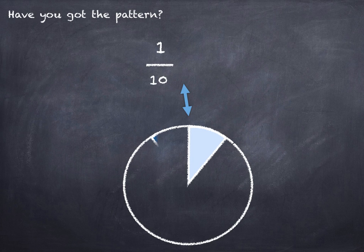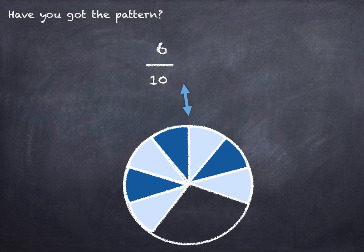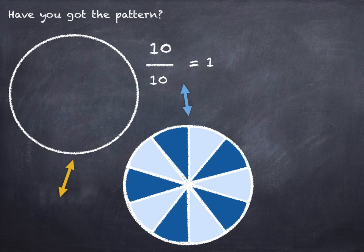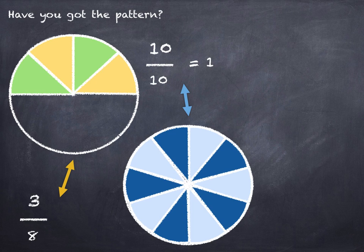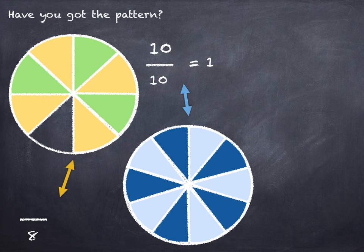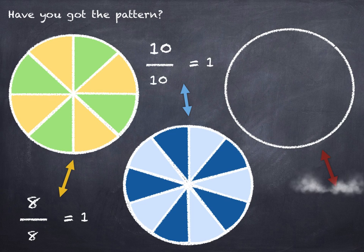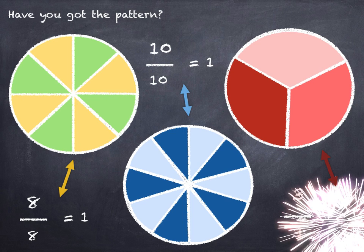What about tenths? Ten tenths equals one. What about eighths? How many eighths in one? Eight eighths in one. And thirds — how many thirds in one? Three thirds equals one.